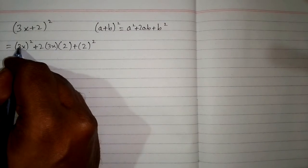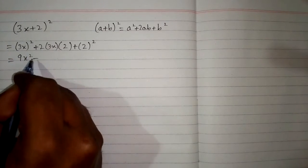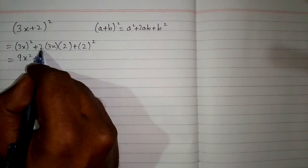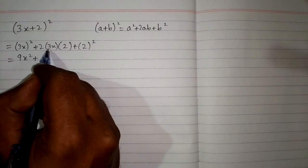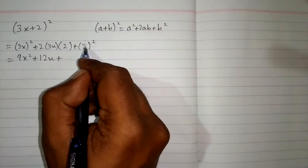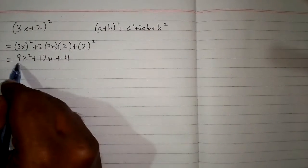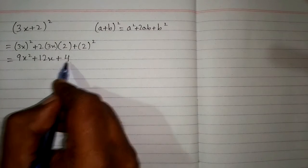So 3 square is 9, square of x is x square plus 2 times 3 is 6 and 6 times 2 is 12. So we have 12x plus square of 2 is 4. So the answer is 9x square plus 12x plus 4.